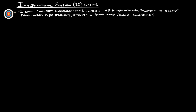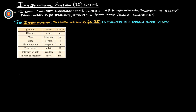Let's look at International System Units. The International System of Units, or SI, is founded on seven base units: distance, mass, time, electric current, temperature, intensity of light, and amount of substance.